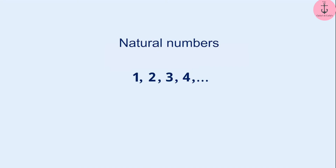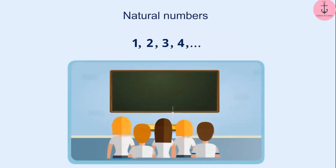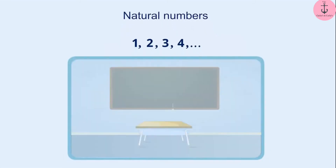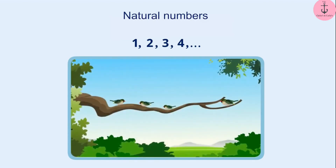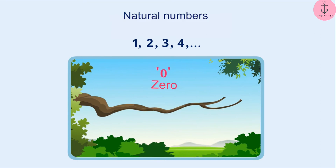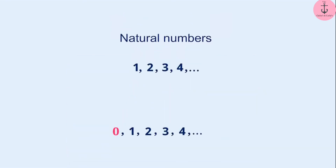We use numbers like 1, 2, 3 and so on for counting. What if there is nothing to count? For example, if there are no students in the class, there is no one to count. What if all birds fly away from the tree? How do you express it in maths? Such a number is expressed as 0 in mathematics. Therefore, if we add 0 to the natural numbers, we get the collection of whole numbers.